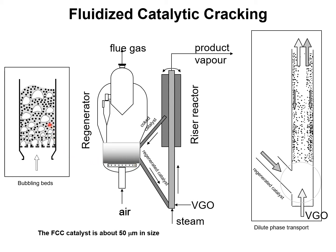Air is bubbled through the spent coke catalyst to burn off the coke, and the regenerated catalyst is recycled back to the reactor. Bubble rise in the regenerator is of importance, and the contacting is in a regime called either the churn turbulent regime or just a turbulent bed contacting regime.